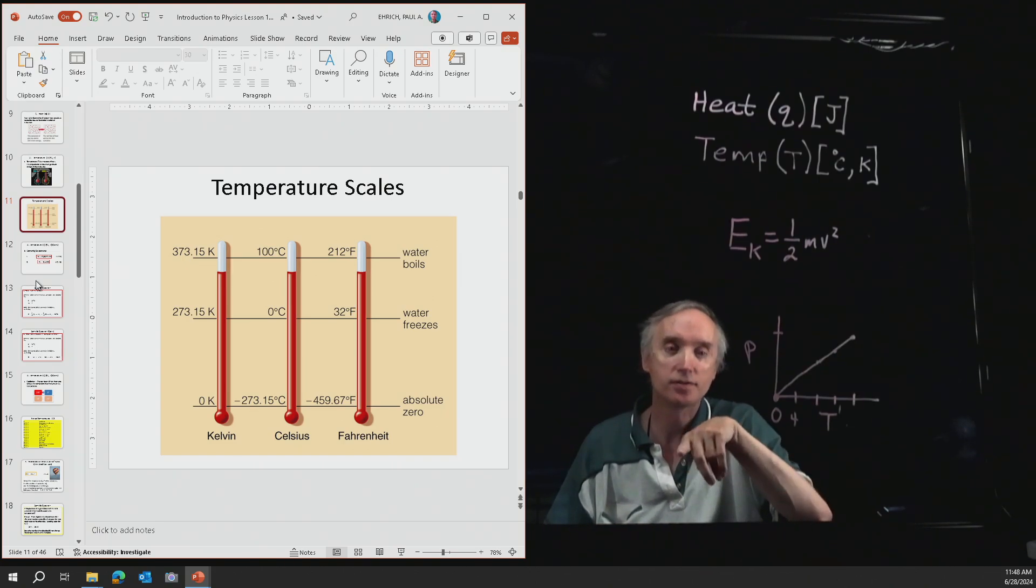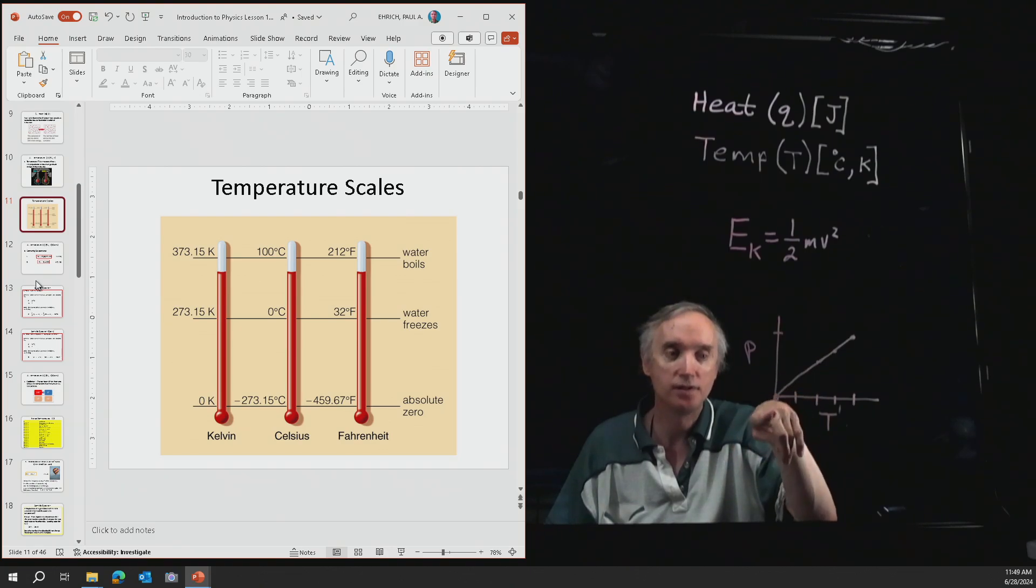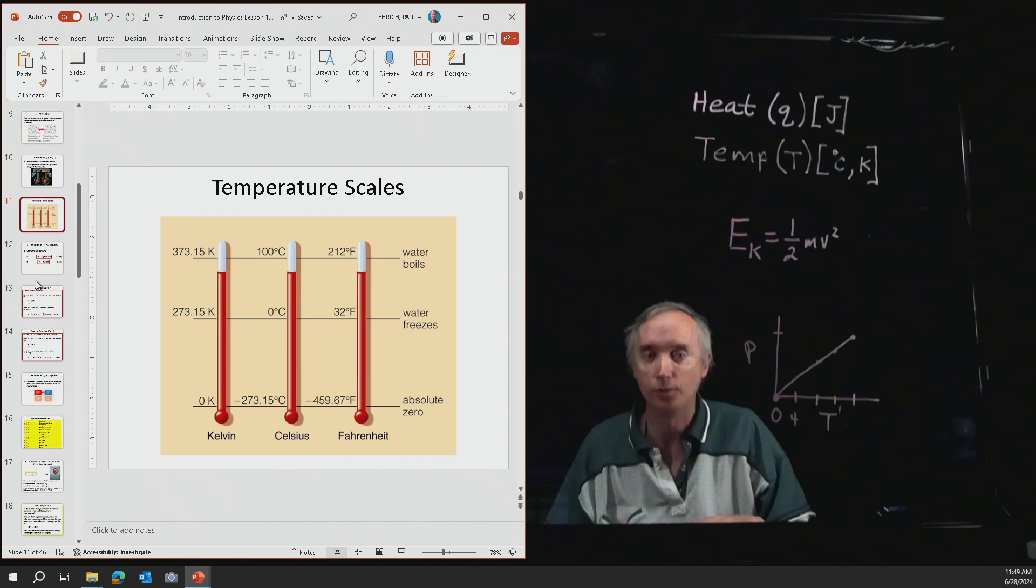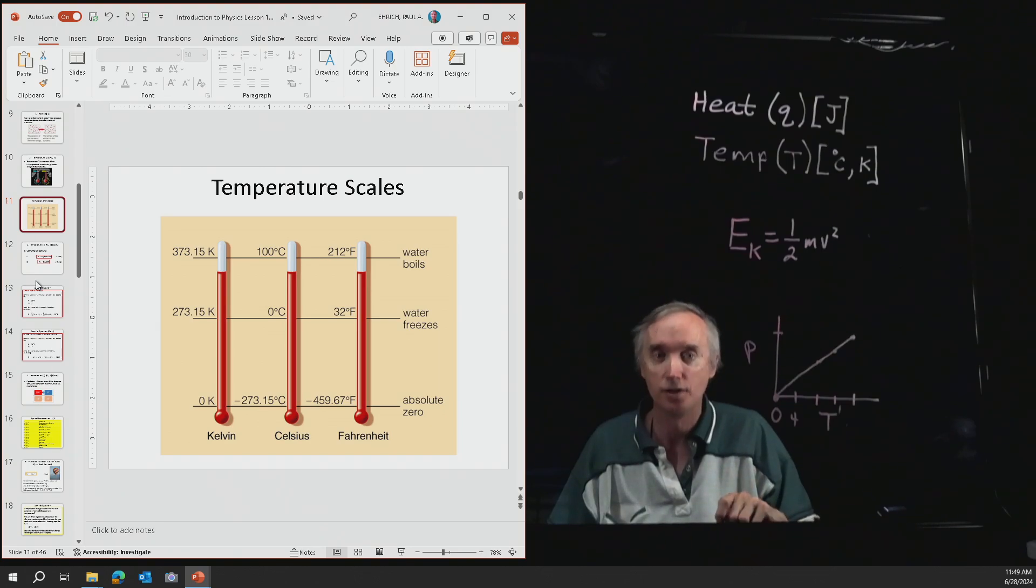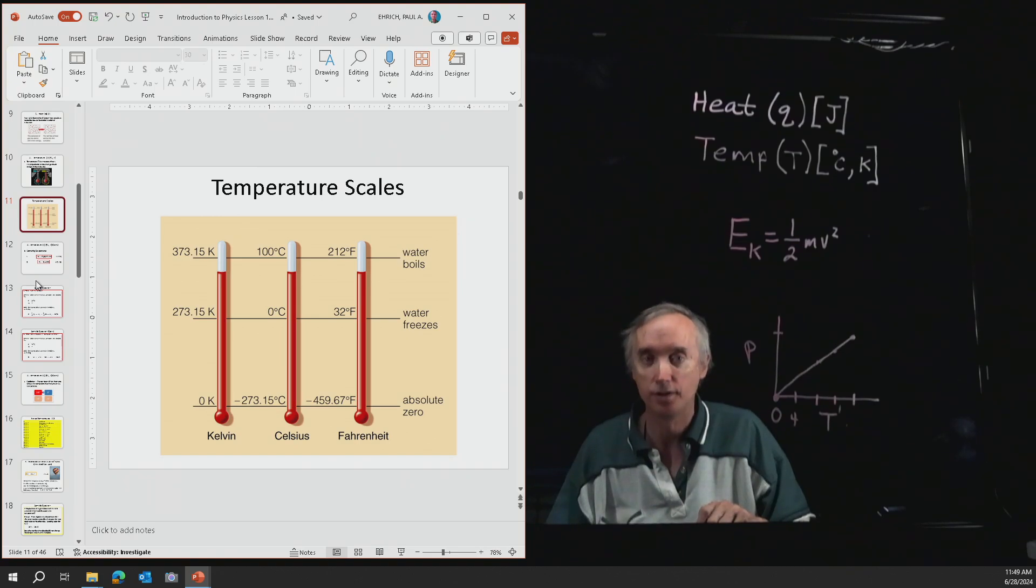If 0 kelvin is equal to negative 273.15 degrees Celsius, then if we add 273 to it, then that will be the freezing point of water. So the freezing point of water is now positive 273.15 kelvin. And then we're going to add another 100 to it to get to the boiling point. So the boiling point of water is going to be 373.15 kelvin.